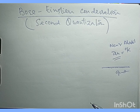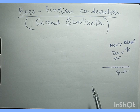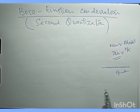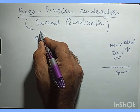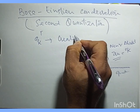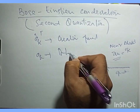Before discussing Bose-Einstein quantization in detail, it's always important to go back to the basics of second quantization. In second quantization, we promote the classical wave functions of quantum mechanics to operators that act on quantum states as a whole — as an entire system. For bosons, we have the fundamental operators: a_k-dagger, which we call the creation operator, and a_k, the annihilation operator.